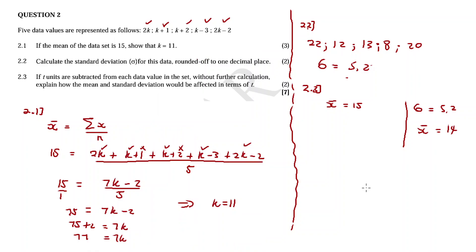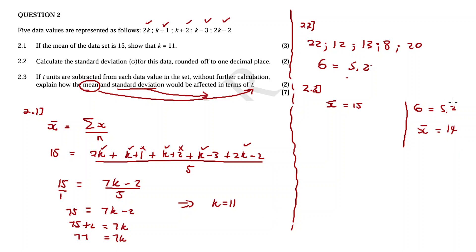The conclusion we can make: the mean will decrease by t — it went from 15 to 14 when we subtracted 1. The standard deviation will remain the same. We can verify this with t equal to 7, 10, or any other value, and it will always be true — the standard deviation won't change. This is only true if we subtract t units from every value in the data set.